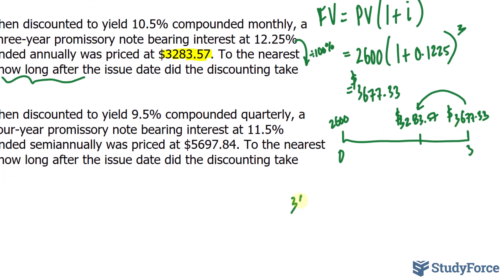The future value is $3,677.33. The present value is $3,283.57, and it is being compounded monthly at 10.5%. So, I'll write down 1 plus 0.105, and we'll divide that by 12, because it's 10.5% compounded monthly. So, we must divide it by 12, and n represents the number of periods, which is the number of months in our case.